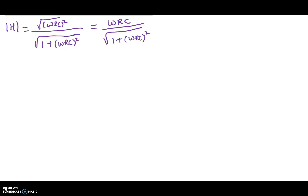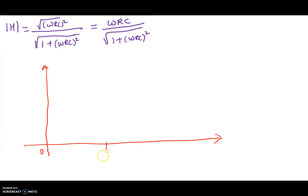Let's focus on the magnitude response. We'll look at what happens at ω = 0, at the cutoff frequency, and at ω = infinity. If ω equals 0, the top part goes to 0·RC = 0. Zero divided by some number is basically 0. So the magnitude of the transfer function at ω = 0 — also called DC — is equal to 0. That means the output voltage is equal to 0.